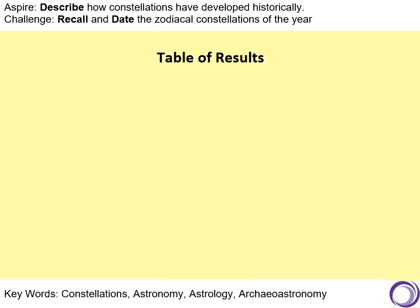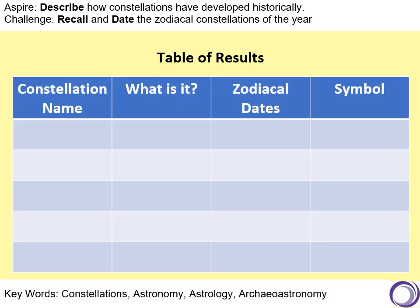We are going to produce a table with each of the constellations. There are 12 constellation names, so you need to go 13 rows down and four columns across — 13 because you need a title row. The columns are: constellation name; what it is; the zodiacal date when it occurs; and the Greek symbol given to it as a representative. Pause this video if you need time to draw the table.